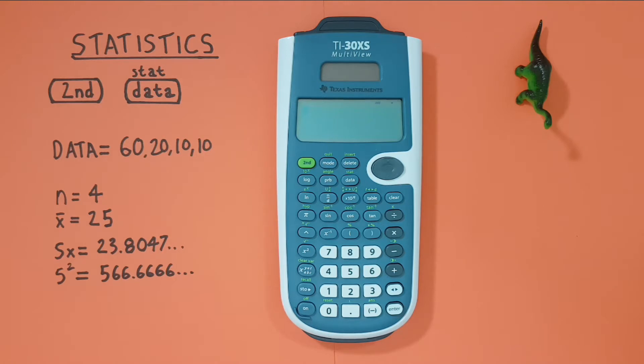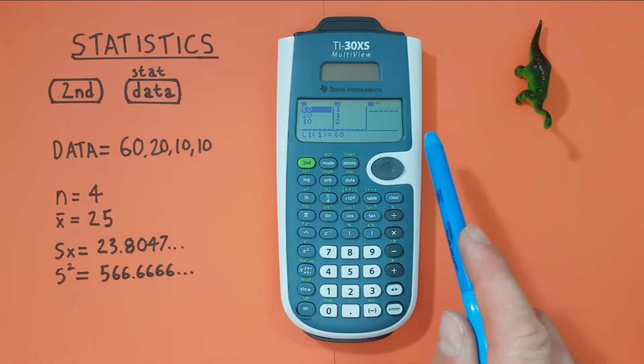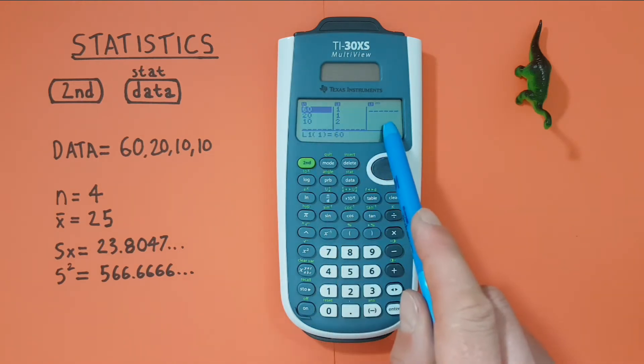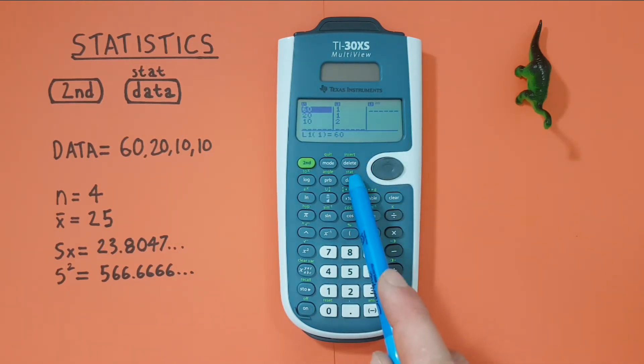To start we need to enter our data set into our calculator. To do this we press the data key and that will bring us to a screen with three lists on it. If you have something on your lists already you can clear your list by pressing the data key again.